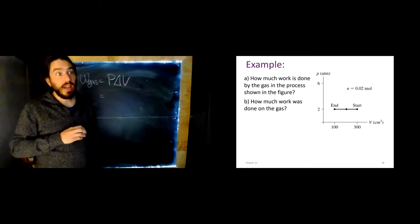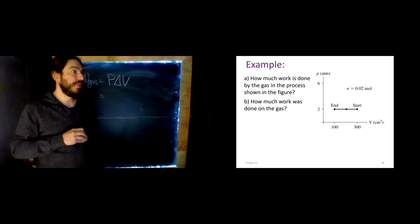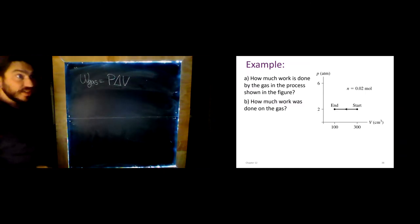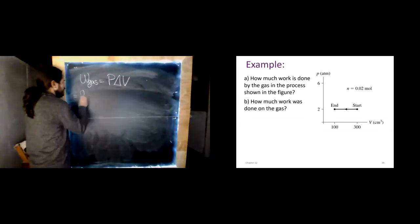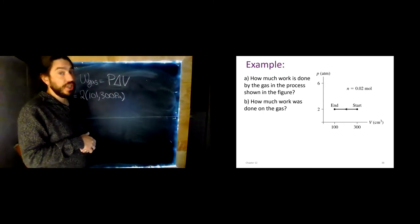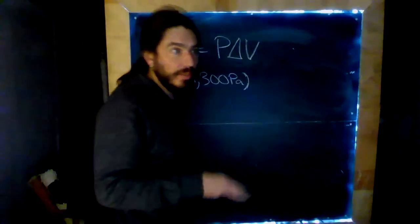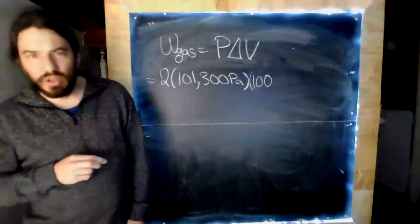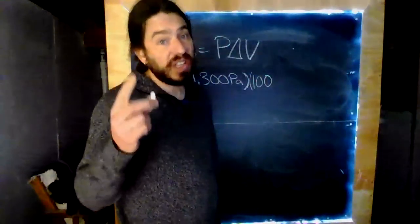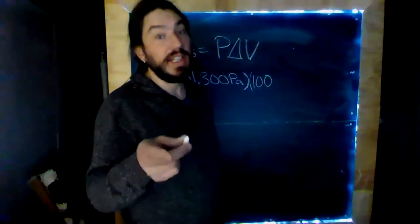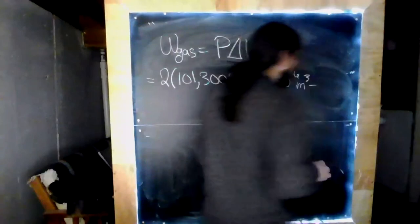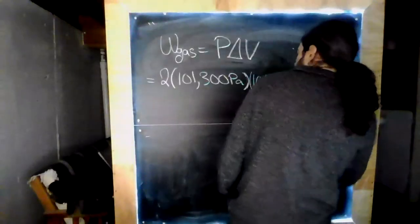So, recall that one atmosphere of pressure is 101,300 pascals. So, my pressure is two atmospheres. So, that is simply two times 101,300 pascals. Now, I need to multiply by the change in volume. Of course, change in anything is final minus initial. So, my final volume is 100, 100 what? Centimeters cubed. I need to get that into meters cubed so that I'll get joules out for my answer. There are 10 to the negative 6th meters cubed in a centimeter cubed. Or, it makes more sense to say, 10 to the 6th centimeters cubed in a meter cubed. So, I'll just write this down as 10 to the negative 6th meters cubed. And then, we have to subtract the initial, which was 300.